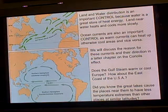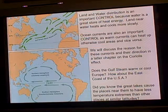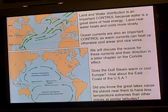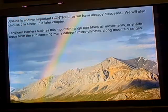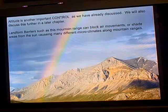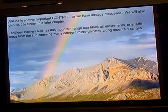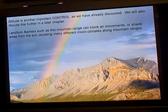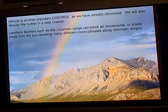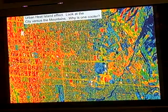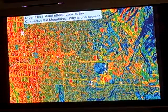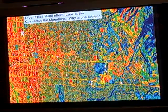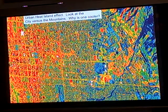Here are some more examples of these controls. The Gulf Stream is the one that warms up Europe. You can read more about that. Altitude and landform barriers — as you can see on this mountain, if you look at the top there's snow and ice, and if you look at the bottom it's nice and green. And for the urban heat island effect, if you look at this area — the city versus the mountains — you can see how much warmer the city is.